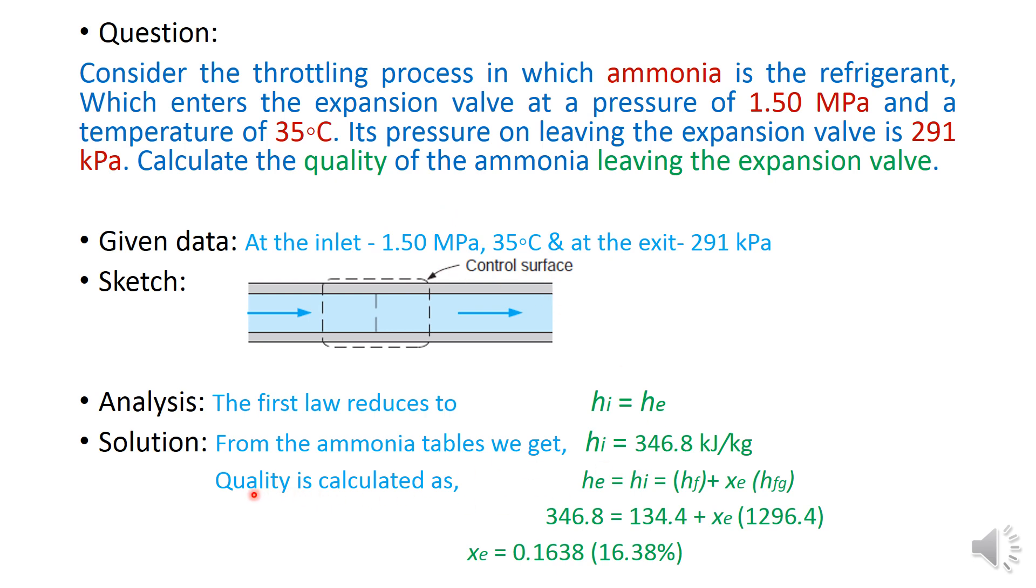After that the quality, as he has asked to find out, can be calculated as equating that exit enthalpy is equal to inlet enthalpy by finding this particular equation. So both HF and HFG here are to be calculated from this particular pressure from ammonia tables.